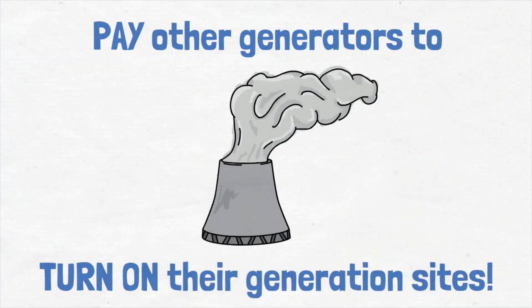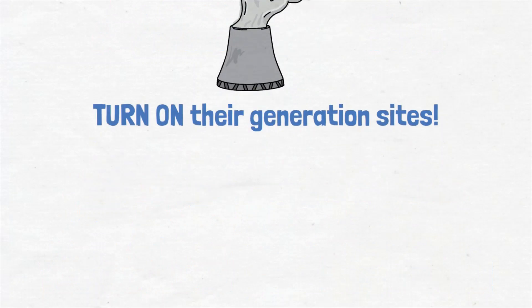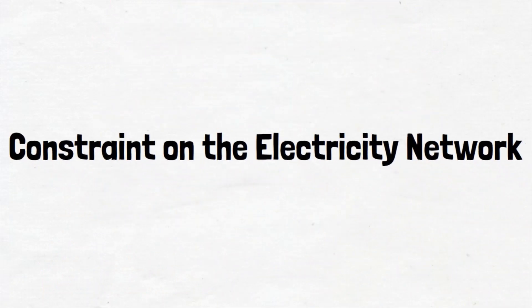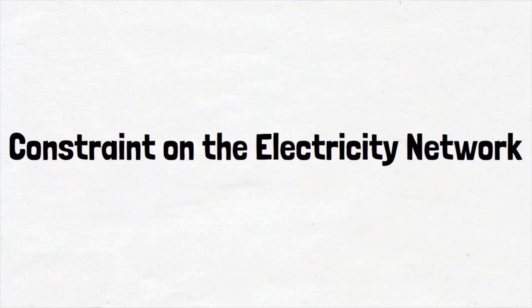How is this possible? This is what's known as a constraint on the electricity network. This particular constraint is called SCOTX, Scottish Export Constraint.